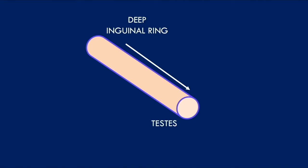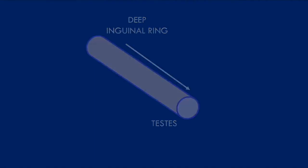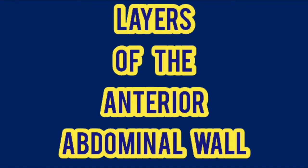The contents of the spermatic cord will then exit the spermatic cord and supply structures within the testes and the scrotum. To further understand the anatomy of the spermatic cord, we need to review the layers of the anterior abdominal wall.